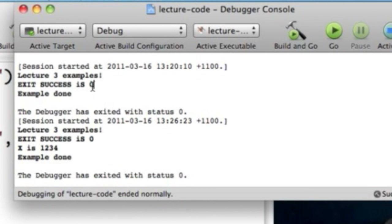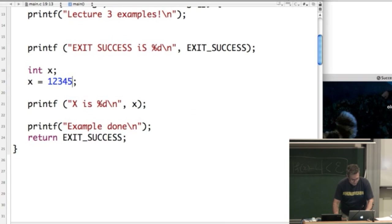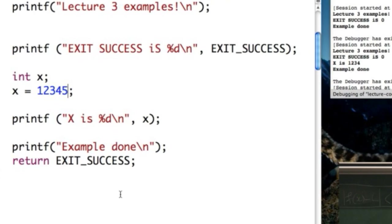So let's just run it, check it works. Yes, print out x is 1, 2, 3, 4. So let's keep putting numbers in. Let's see. What about 1, 2, 3, 4, 5? Can we store that inside an int? Yeah, it seems happy. What about 1, 2, 3, 4, 5, 6? Yep. 1, 2, 3, 4, 5, 6, 7. Yep.